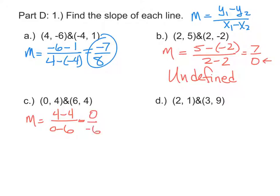When you have 0 in the numerator, this fraction is equal to 0, so this one does have a slope of 0, whereas the previous one did not have a slope at all.